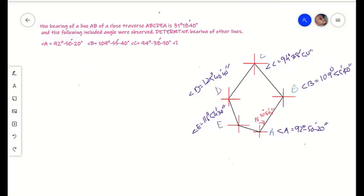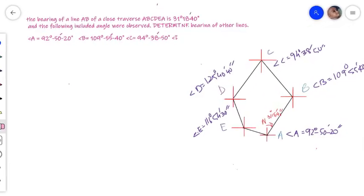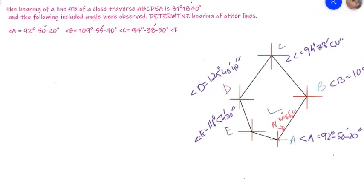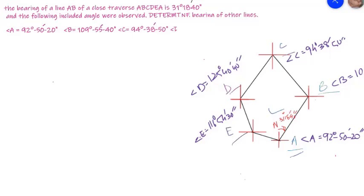Hi and welcome back. In this short video I will show you how to find out the bearing of lines of a closed traverse when the bearing of the first line is given. In this numerical example, the bearing of line AB of a closed traverse ABCDEA is 31 degrees 18 minutes and 40 seconds, and the following included angles were observed.